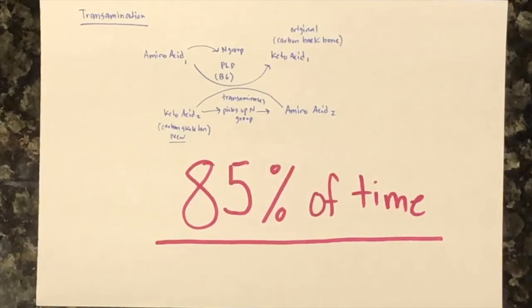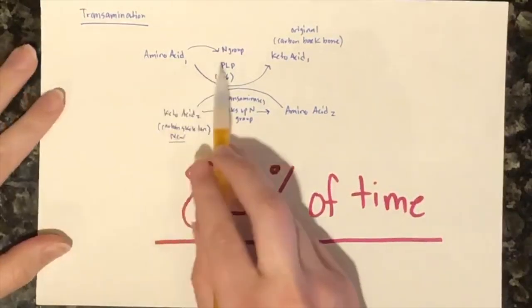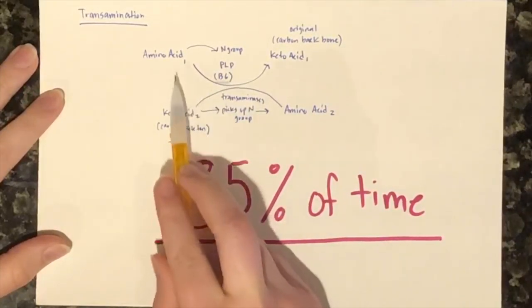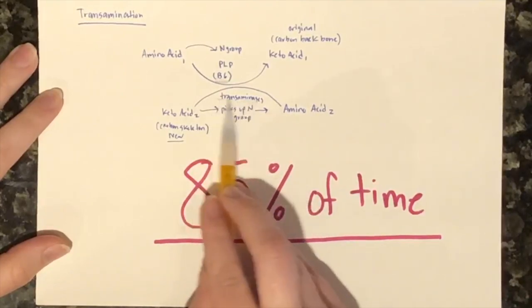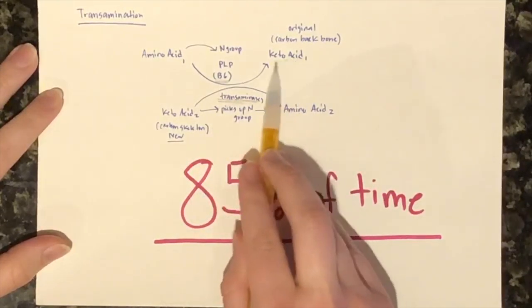Transamination allows the body to synthesize other non-essential amino acids to build muscle, for example. The amine group that contains nitrogen is cleaved off and is held by PLP, a vitamin B6 cofactor. A new carbon skeleton picks up that amine group with the help of transaminases. The original carbon skeleton is then free to go pick up another amine group as well to form a new amino acid.